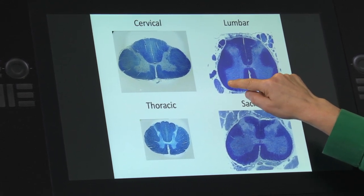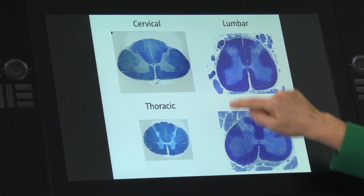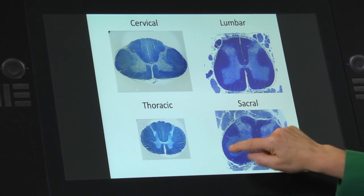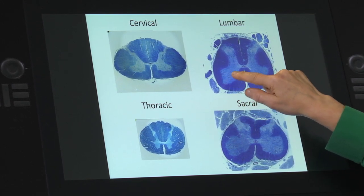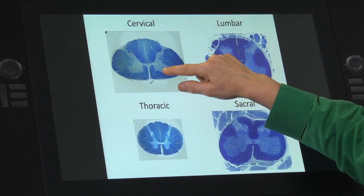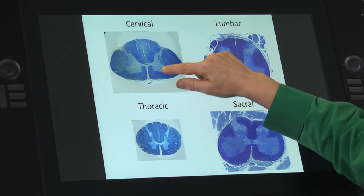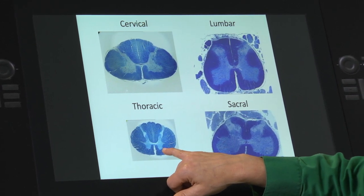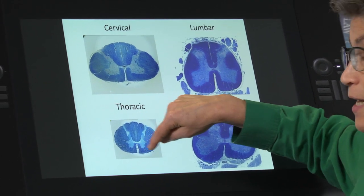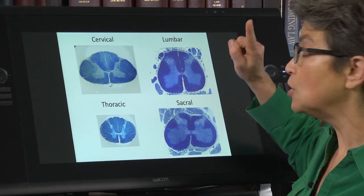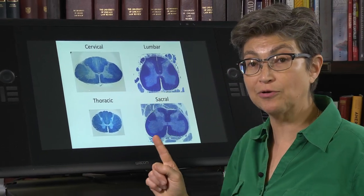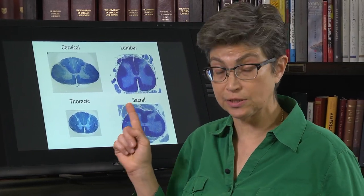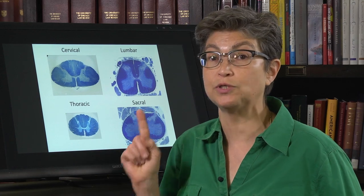Here in the lumbar cord, there's a lateral extension, and also even in the sacral cord. So this is serving the feet. This big thing here is serving the hands. And this thoracic cord's got no limb to serve, so it's a paltry little skinny thing that has no lateral extension. So that's one thing. If you have a lateral extension, you're either in cervical or lumbosacral.